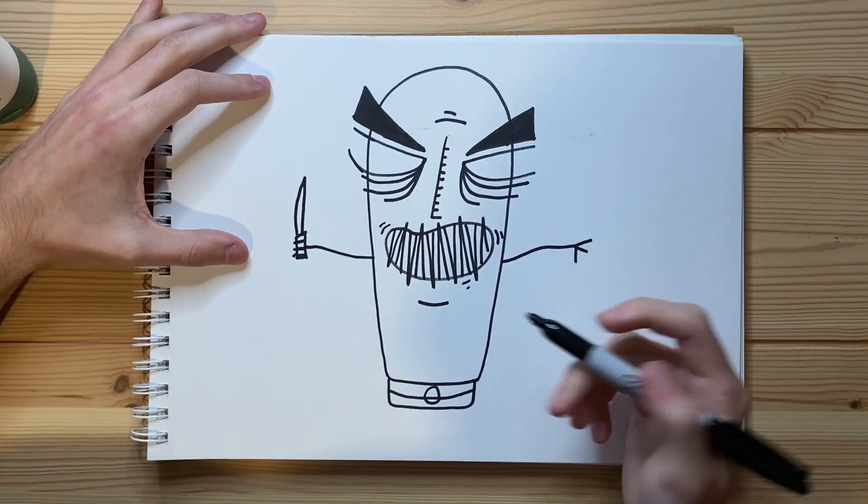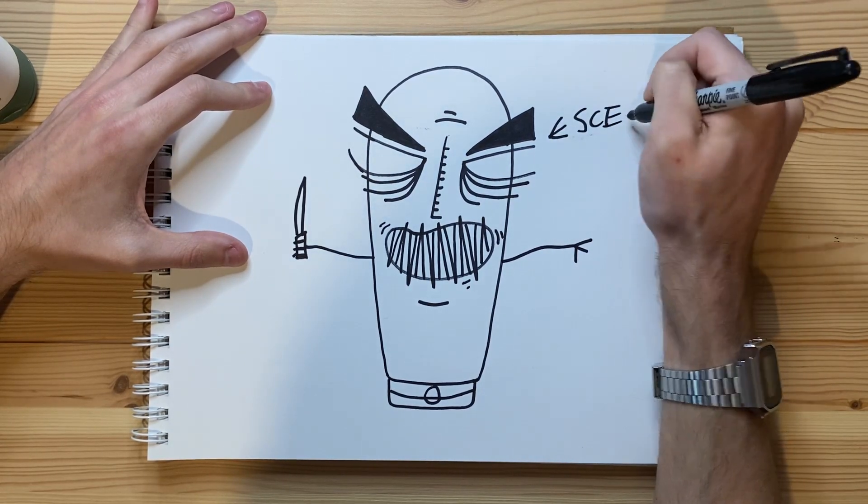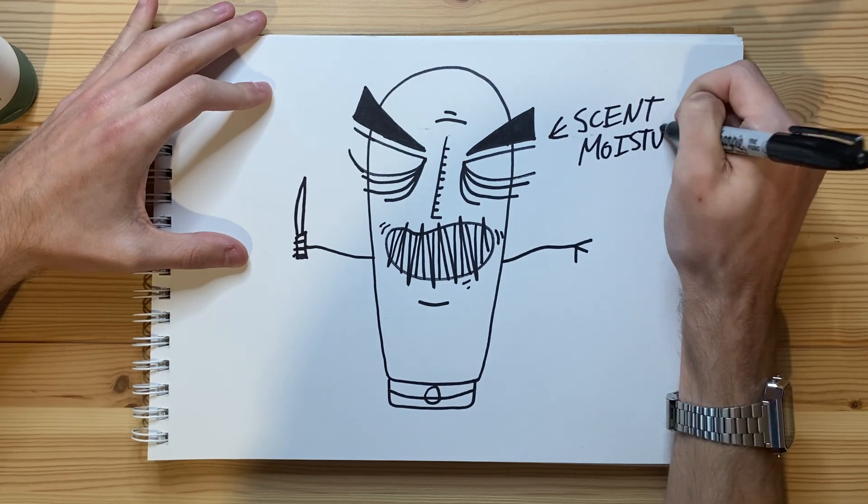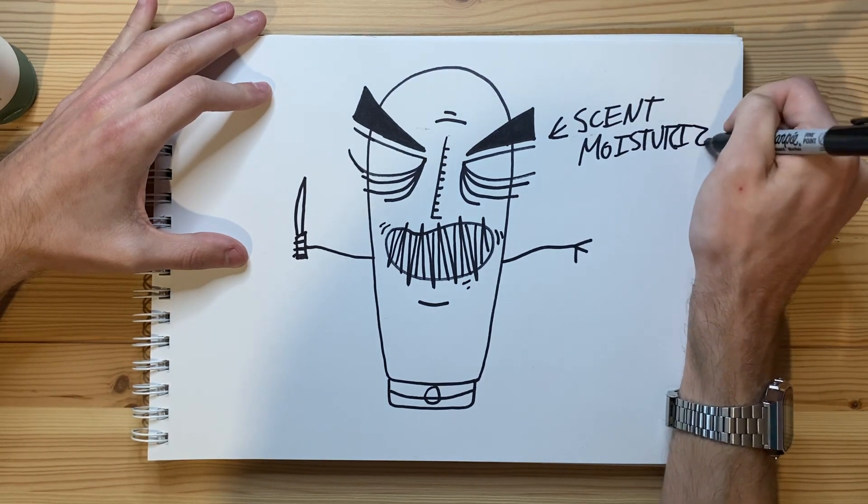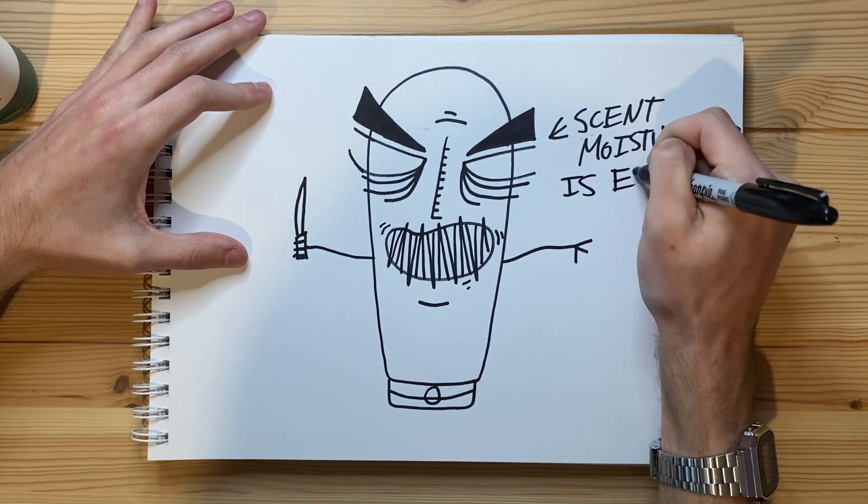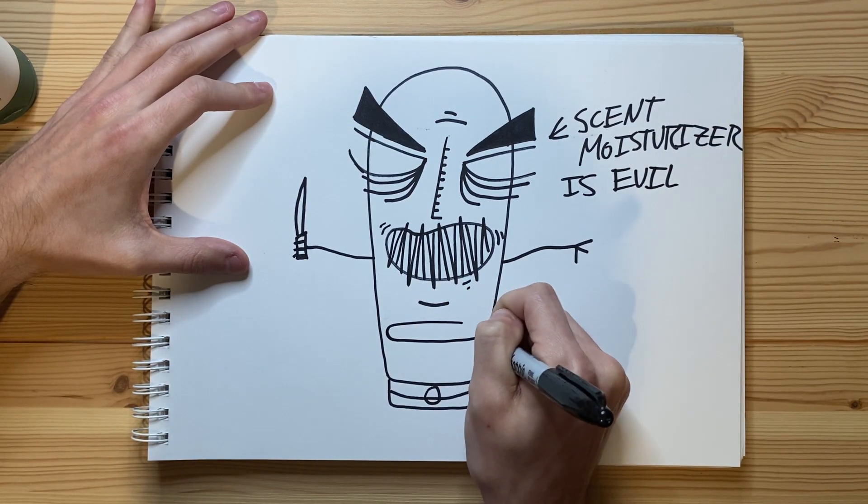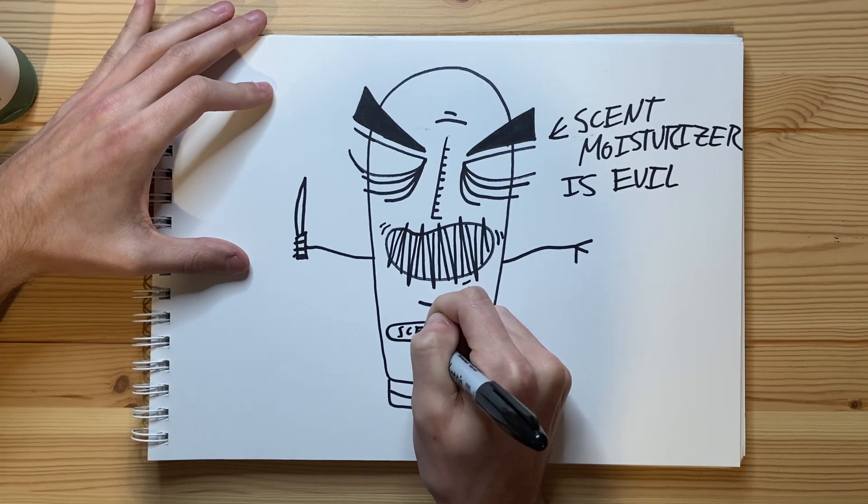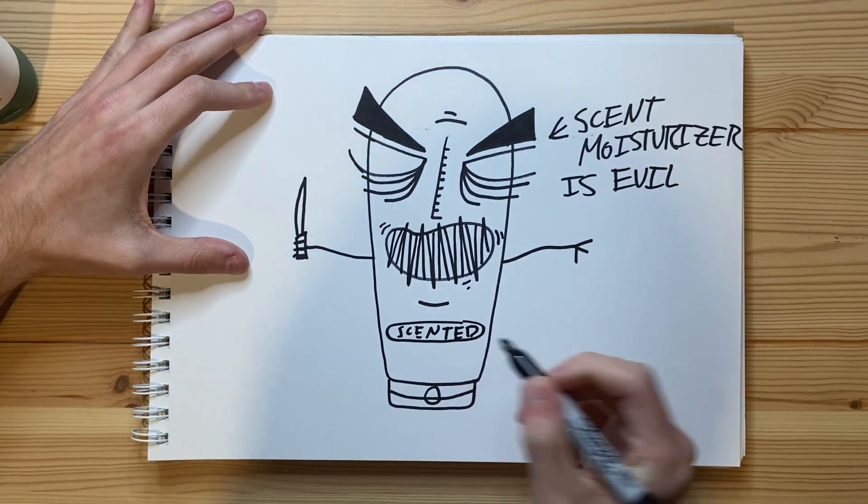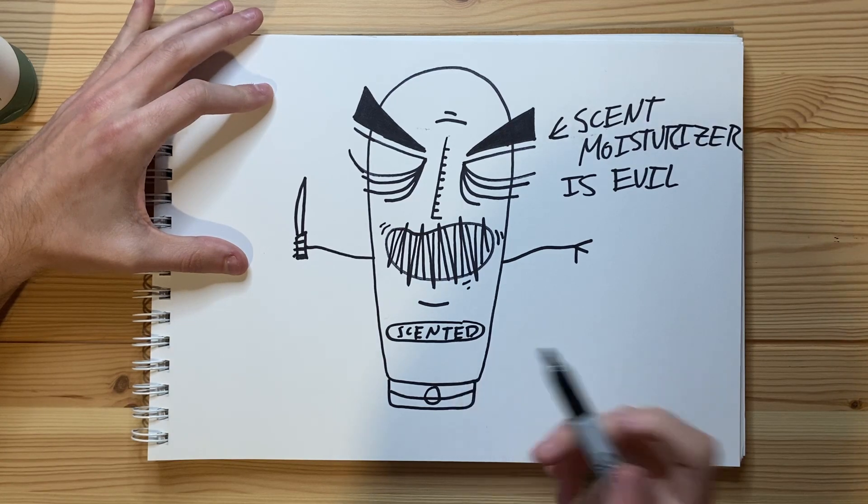And there we go. This is a pretty evil bottle of moisturizer. I ain't going to lie. And I've got to make it extra clear. Scented. M-O-I-S-T-U-R-I-Z-E-R is evil. And let's just add a little bit of a label right here. Let's just write S-C-E-N-T-E-D. Wow, that actually fit really well. Certainly no complaints on my behalf.